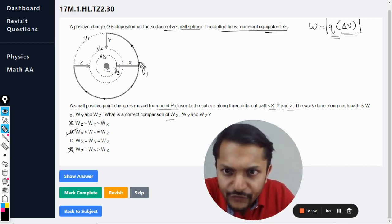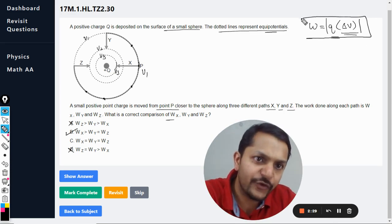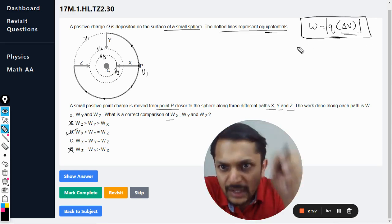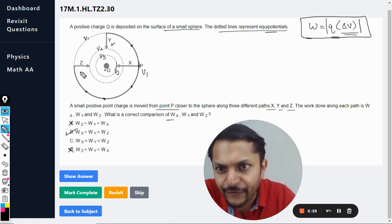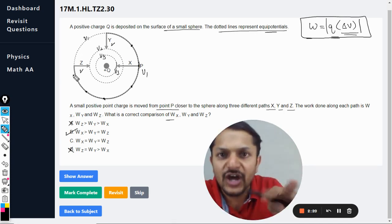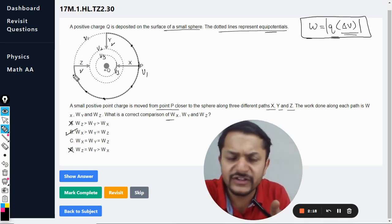We are going to find the potential differences using this formula here. We are just substituting the values, putting the values here. So for Y and Z, the potential difference is the same, the charges are the same. So there is no difference in the work done.